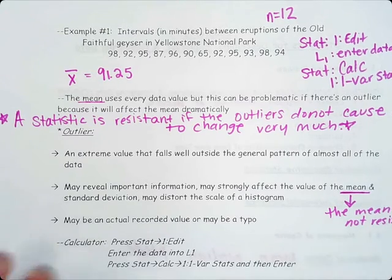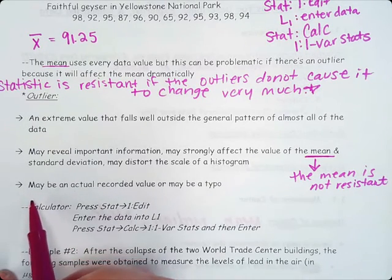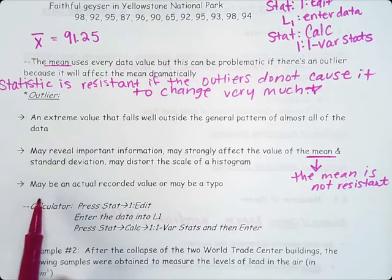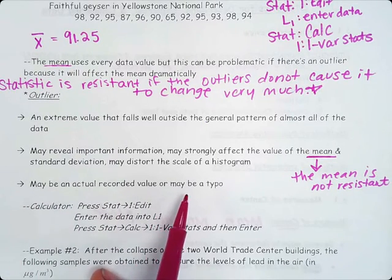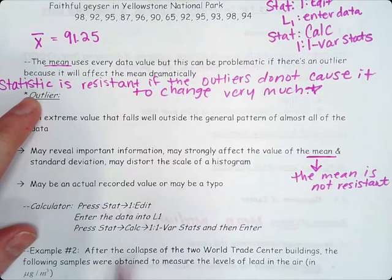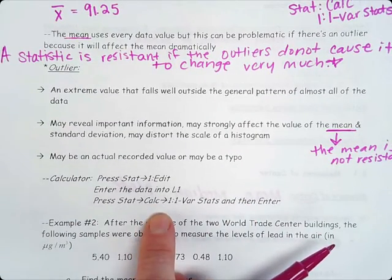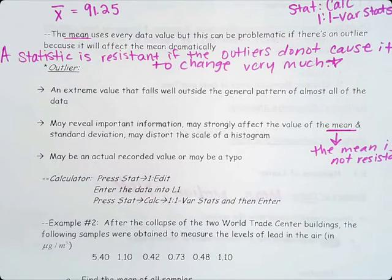Because the mean uses every data value, which can be problematic if there's an outlier, because it will affect the mean dramatically, that means that the mean is not resistant. An outlier is an extreme value that falls well outside the general pattern of almost all the data. It may reveal important information, may strongly affect the value of the mean and standard deviation, and may distort the scale of the histogram. Since it affects the mean, that means the mean is not resistant.